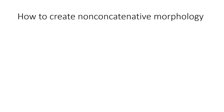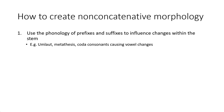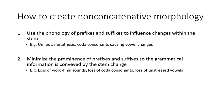So in summary, to make a naturalistic triconsonantal root system, or indeed any non-concatenative system, use the phonology of prefixes and suffixes to influence changes within the stem. Then, minimize the prominence of the prefixes and suffixes as much as possible, so that the grammatical information is conveyed by the stem change. Then employ analogy to spread the regular paradigm to words whose phonology made them resistant to the sound changes that produced the pattern.